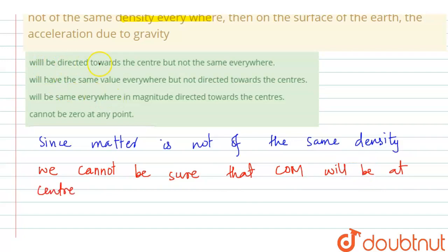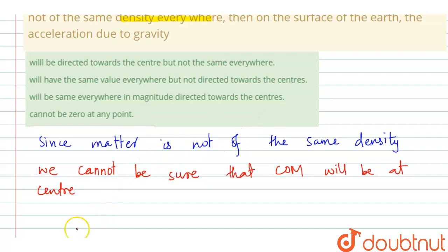Option A says gravity will be directed towards the center but not the same everywhere. Option B says it will have the same value everywhere but not directed towards the center. We've established that the direction may or may not be toward the center. As for magnitude, if the density is not uniform, we cannot say anything definite about it either.